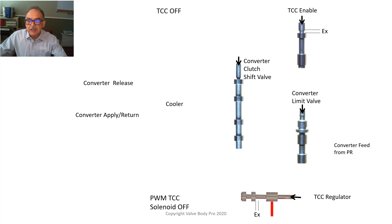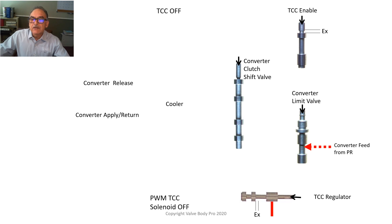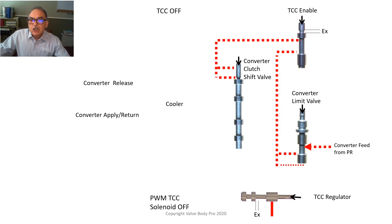Here we have simplified hydraulics of the torque converter clutch in the off position. The converter feed oil comes from the pressure regulator valve and has to go through the converter limit valve. The job of the converter limit valve, as it implies, is to limit the amount of pressure that enters the torque converter — we don't want mainline pressure entering the converter. This regulated fluid then goes through the TCC enabled valve and ends up at the top of the converter clutch shift valve, assisting it to maintain in the off position.